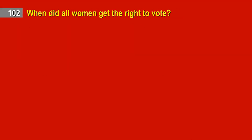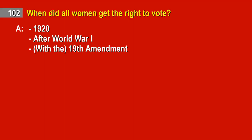Question 102. When did all women get the right to vote? Answer: 1920. After World War I. With the 19th Amendment.